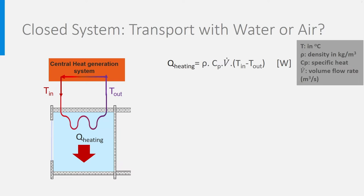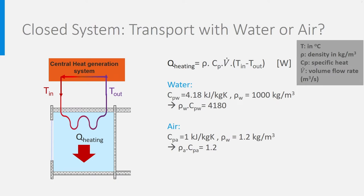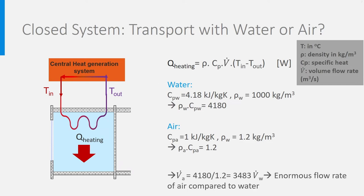Let's compare the properties of water and air. For water, the specific heat Cp is 4.18 kJ per kilogram Kelvin, and ρ is 1000 kg/m³, giving ρCp = 4180. For air, Cp is 1 kJ/(kg·K) and ρ is 1.2 kg/m³, giving ρCp = 1.2 — quite a difference from water. This difference must be compensated by a much higher flow rate of air compared to water if we want to transport the same quantity of heat. The volume flow rate of air must be 3,483 times that of water — what a difference!